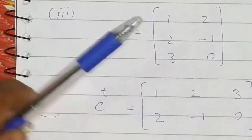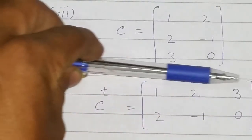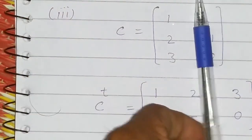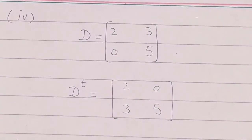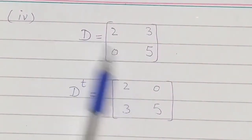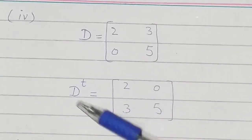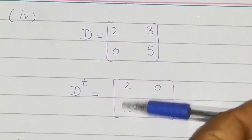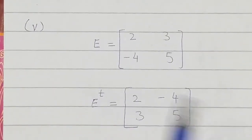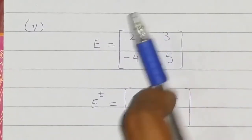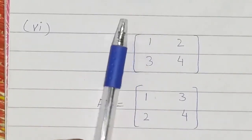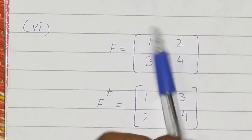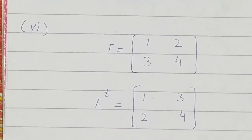For matrix C, the first column is made into a row and the second column is made into the second row — that is the transpose of C. For matrix D, the first column becomes the first row and the second column becomes the second row. Similarly for E and F: the first column becomes the first row and the second column becomes the second row — that is the transpose of F.